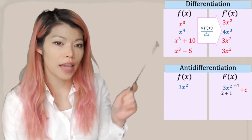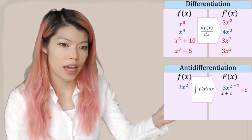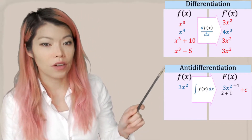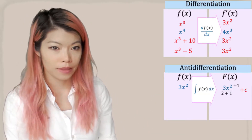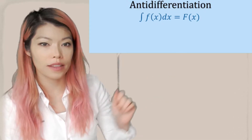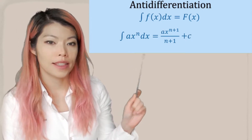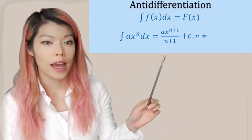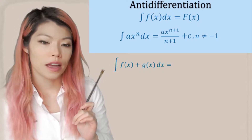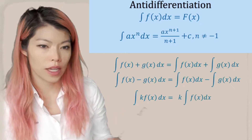To differentiate is to find the d/dx of the function, and to anti-differentiate we use that integral symbol. If the derivative of f(x) is f'(x), then the anti-differentiation gives you capital F(x) by adding 1 to the power and dividing by the new power, then adding c because we don't know what the constant is — it could be 0 or some other value. Note that n cannot equal negative 1, otherwise the denominator would be 0. Just like derivatives, when we anti-differentiate we can add, subtract, and multiply by a constant k.